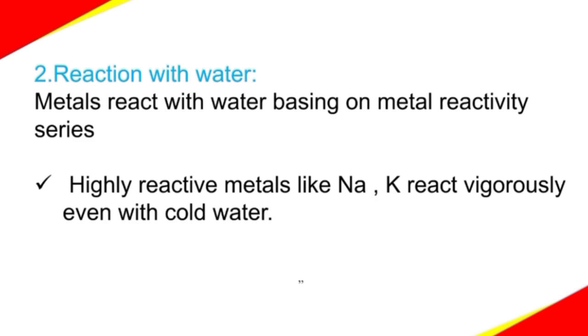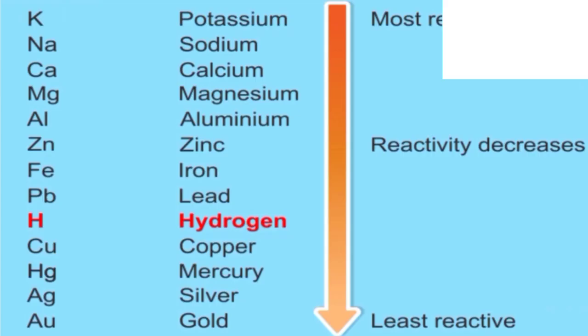Here we go with metal reactivity series. The arrangement of metals in the order of their reactivity is nothing but metal reactivity series. In this, we can see these following metals: Potassium, sodium, calcium, magnesium, aluminium, zinc, iron, lead, hydrogen, copper, mercury, silver and gold. These are arranged in the order of their reactivity. Potassium comes the first, highly reactive and gold comes last, least reactive.